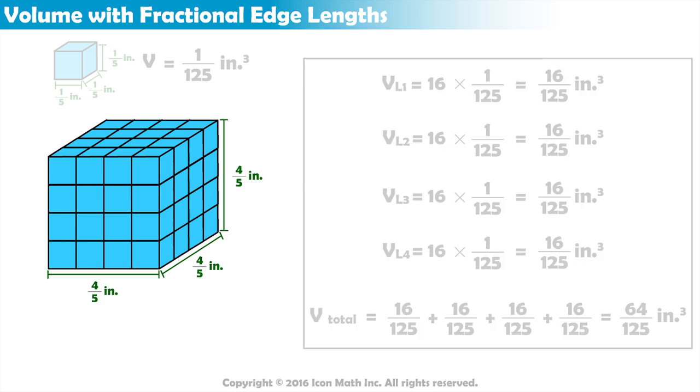This is the same result as multiplying the original figure's length, width and height. 4/5ths times 4/5ths times 4/5ths equals 64 over 125 inches cubed.